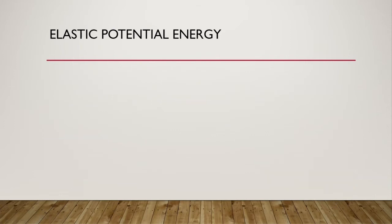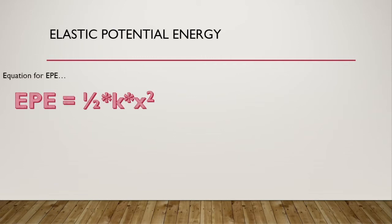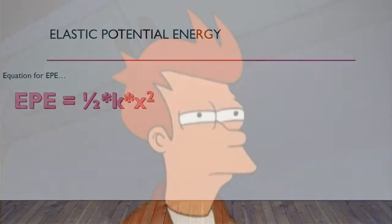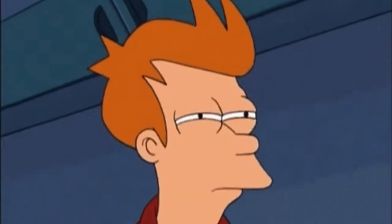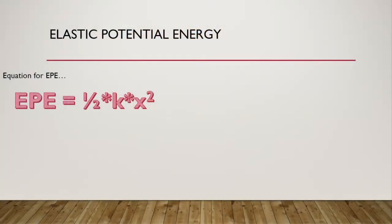Now let's talk about the equation for elastic potential energy. That equation is pretty simple: EPE equals one half KX squared. This equation is the exact same kind of format as the kinetic energy equation — one half times a variable, times a variable squared.